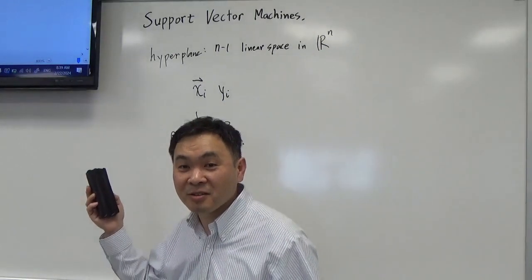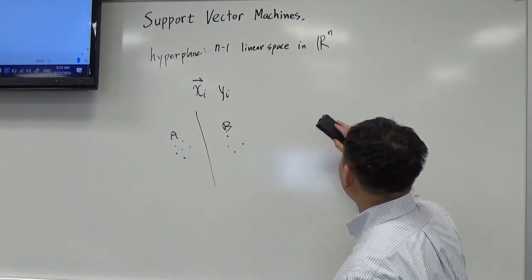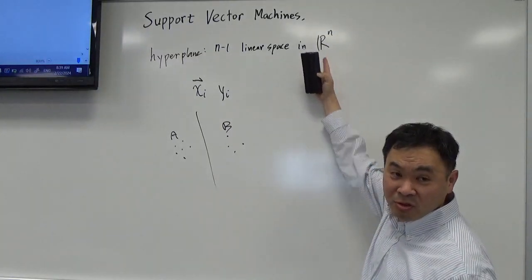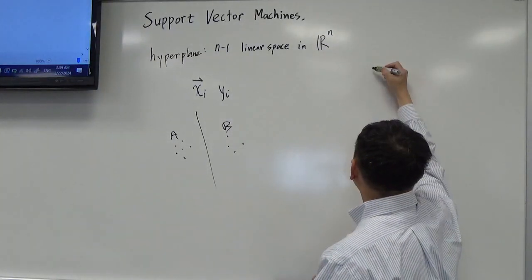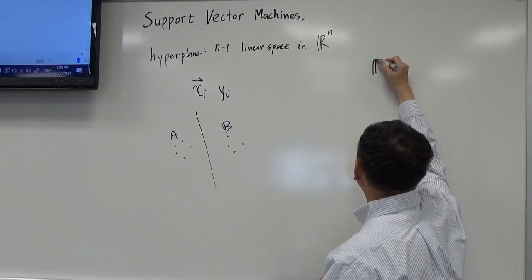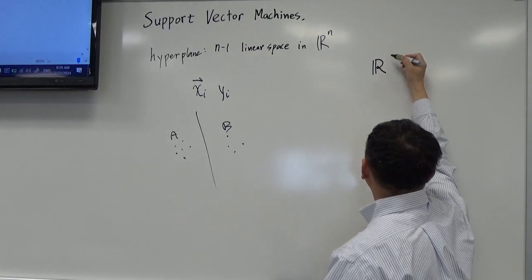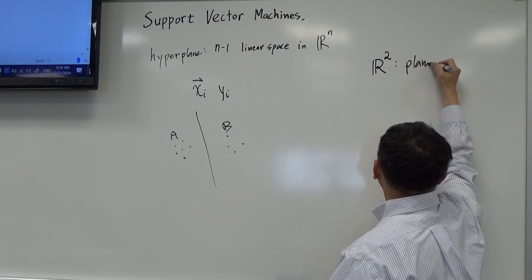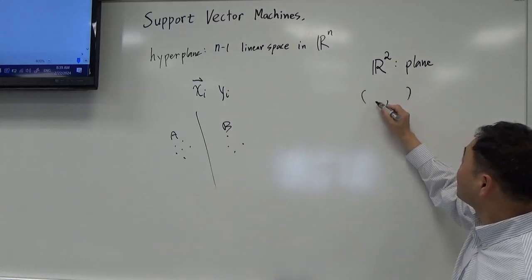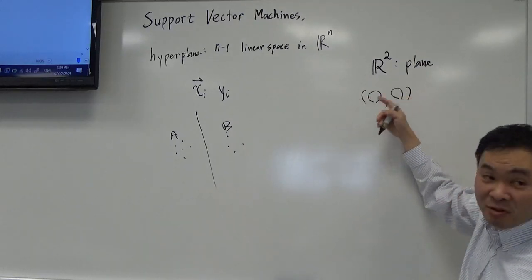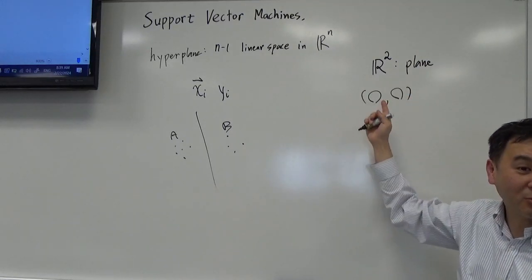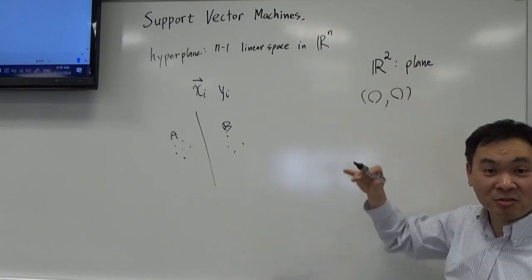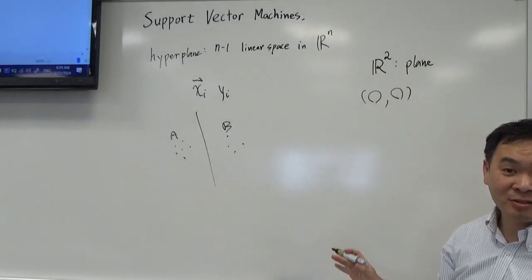R is for real numbers. So if you say R2, that means it's a plane, because it's a tuple of two real numbers. If you say R3, that's the three-dimensional space.